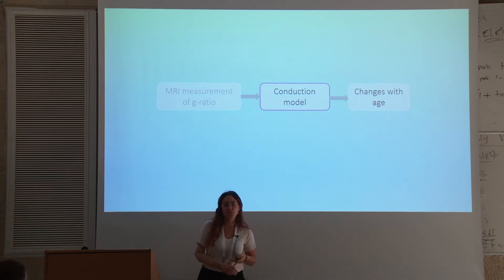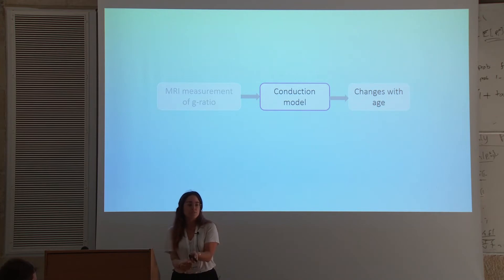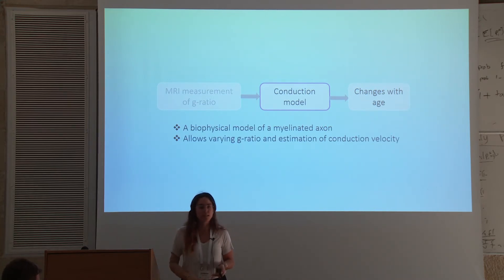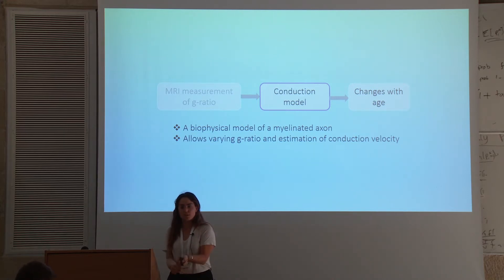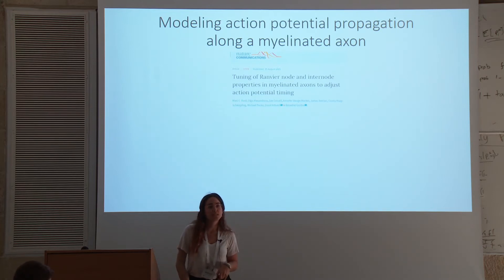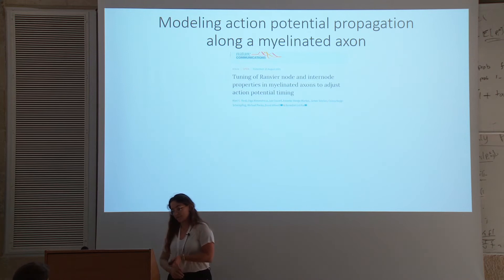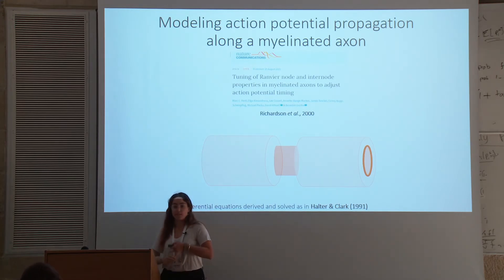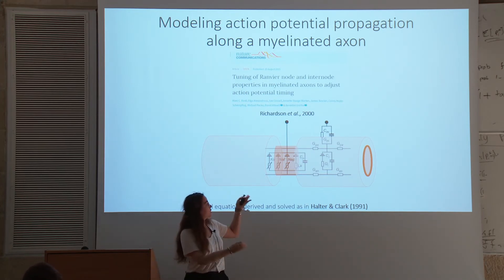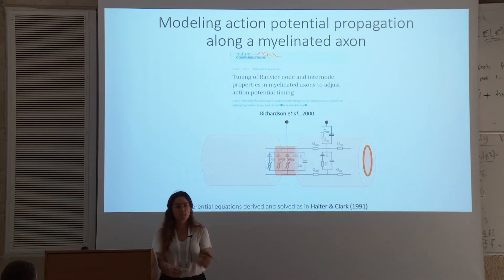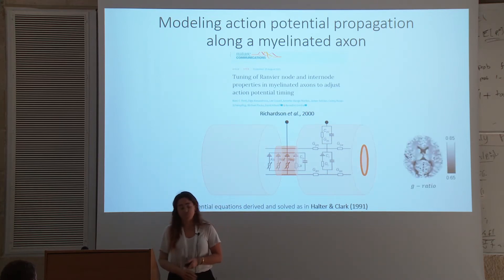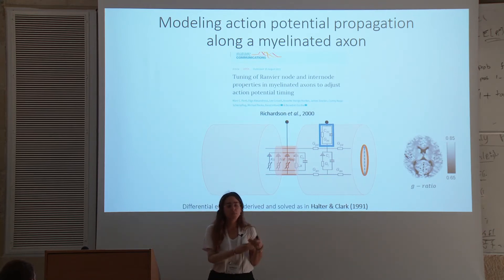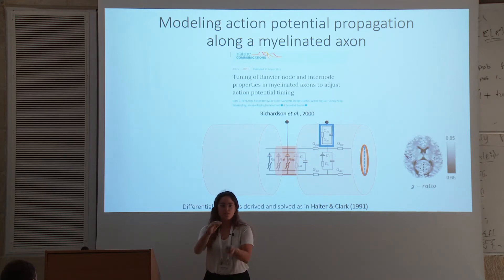I've shown you how we can estimate g-ratio in a white matter tract. The question is how we can use this measurement to say something about conduction along these tracts. I was looking for a biophysical model of a myelinated axon that would allow me to play with parameters and estimate conduction properties. What I ended up using was an implementation of a numerical simulation published by David Athera's group. In this study, they model the axon based on the Hodgkin-Huxley model as an electrical circuit. To actually run the simulation, there are many parameters which I don't have access to, but I can take most of them from the literature. I can then incorporate my g-ratio measurements and modify myelin thickness, which would modify the electrical properties of the membrane — the resistance and capacitance.